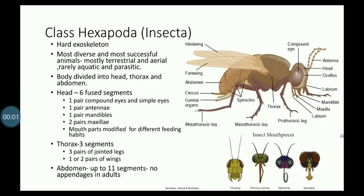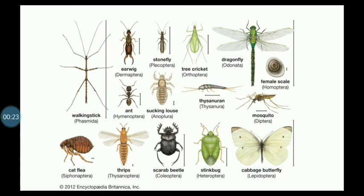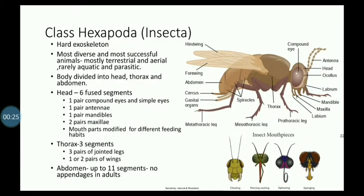Class Hexapoda — alien insect. Hexapoda means six-legged arthropods, which includes our most common dragonfly, butterfly, mosquito, stick insect, and fleas. They are the most diverse group and the most successful animals that you can see in the world.